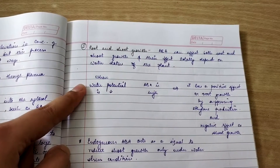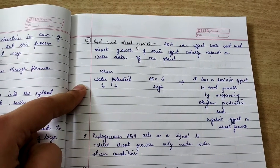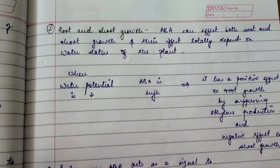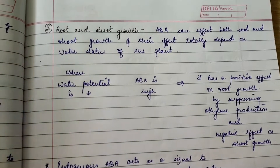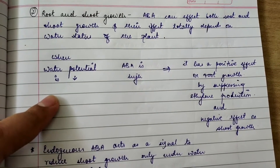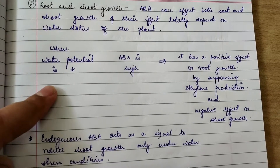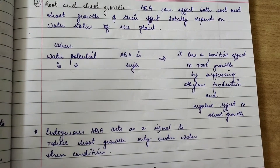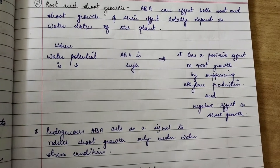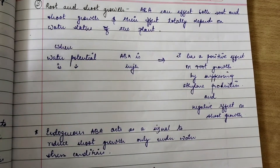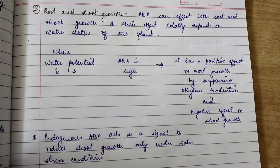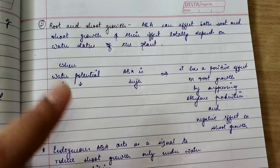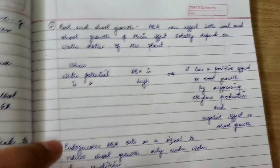Root and shoot growth: abscisic acid can affect both root and shoot growth and the effect totally depends upon the water state of the plant. When water potential is less, abscisic acid concentration is high. It has a positive effect on root growth by suppressing ethylene production, and a negative effect on shoot growth. Endogenous abscisic acid acts as a signal to reduce shoot growth only under water stress conditions.